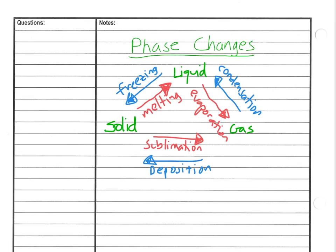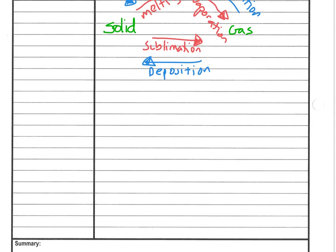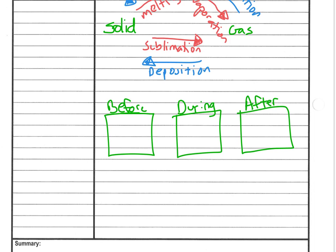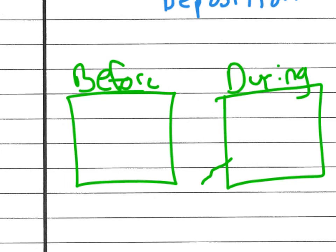So, let's talk about how we are going to draw pictures of phase changes. For these, we generally draw a before, a during, and an after box. So, let me label those here. And in our picture, let me zoom in here, we might zoom in a little bit and then think about it.